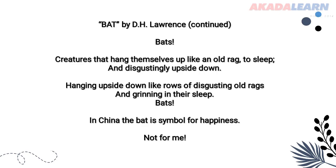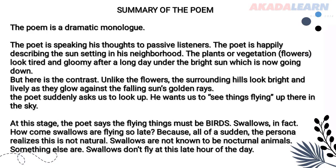Now we'll be analyzing the poem itself. The poem is a dramatic monologue — the poet is speaking his thoughts to passive listeners, talking to the audience. The poet is happily describing the sun that is setting in his neighborhood. From the descriptions, we discover that he is in Italy — Florence, to be precise — and he's enjoying the setting of the sun. The plants and flowers look very tired and gloomy after a long day under the bright sun which is now going down.